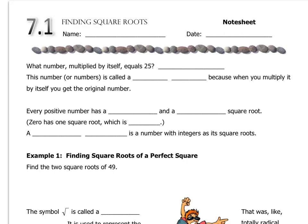So my question for you first is, do you know what number, when you multiply it by itself, you get 25? If you said 5, you are wrong, because the answer is 5 and negative 5. Don't forget, negative times a negative is a positive. This number, or numbers, is called the square root because when you multiply it by itself, you get the original number.